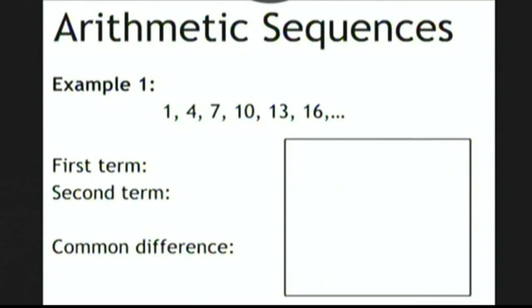Notice that the first term of this sequence is 1, the second term is 4, and so on. Also notice that to get from 1 to 4, we add 3, and to get from 4 to 7, we also add 3, and so on. This number 3 is called the common difference of the sequence.